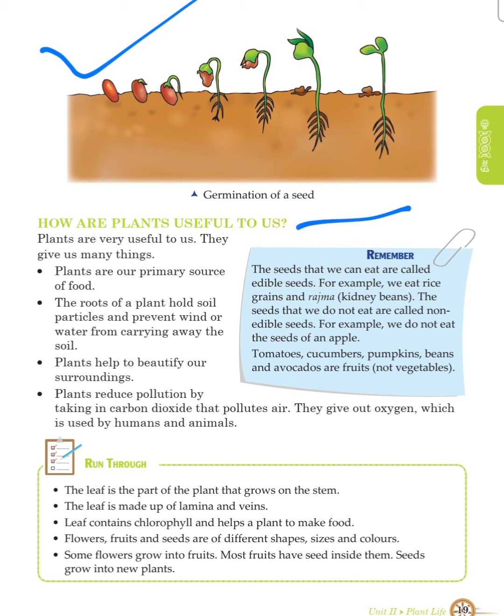How are plants useful to us? Plants are very useful to us and give us many things. Plants are our primary source of food. The roots of a plant hold soil particles and prevent wind or water from carrying away the soil. Plants help to beautify our surroundings. Plants reduce pollution by taking in carbon dioxide and polluted air, and give out oxygen which is used by humans and animals.